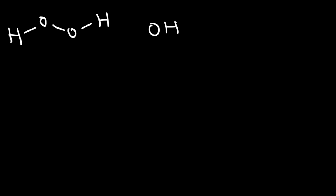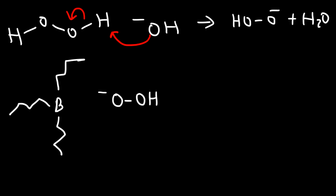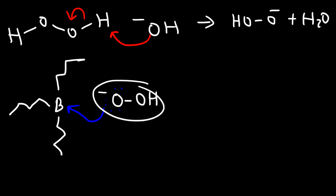Now let's focus on step 2. We have hydrogen peroxide, hydroxide, and water. Hydroxide is a strong base and it's going to deprotonate the hydrogen peroxide molecule, giving us a peroxide ion plus water. Going back to the boron atom, which has three R groups, it's going to react with the deprotonated peroxide ion. Before the attack, boron is sp2 hybridized and has an empty p-orbital, so the peroxide ion easily attaches to that empty p-orbital, giving us this intermediate.